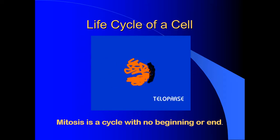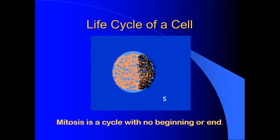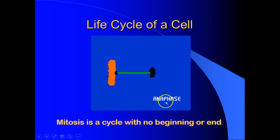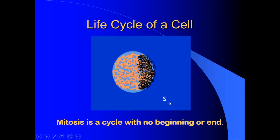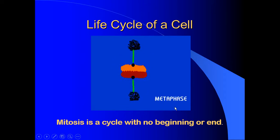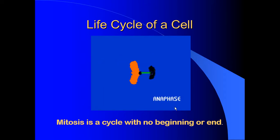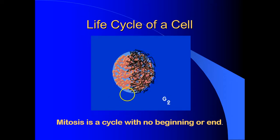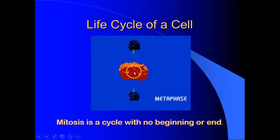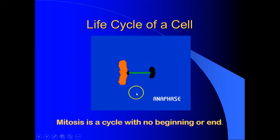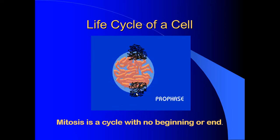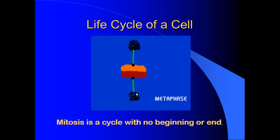Here we see the life cycle of a cell. Keep in mind that this is a cycle with no beginning and no end. Looking at the diagram, you can see what's happening in each of the phases. The red and the orange are the DNA. You can see as it makes a copy, those DNA chromosomes get split and then two new cells form.